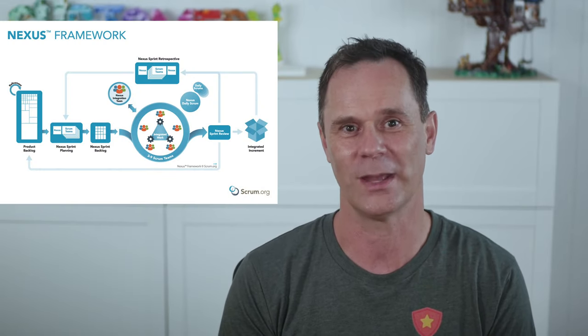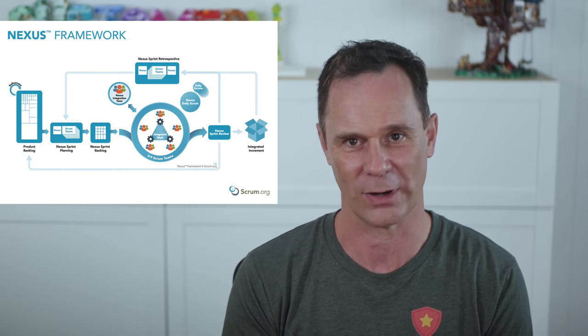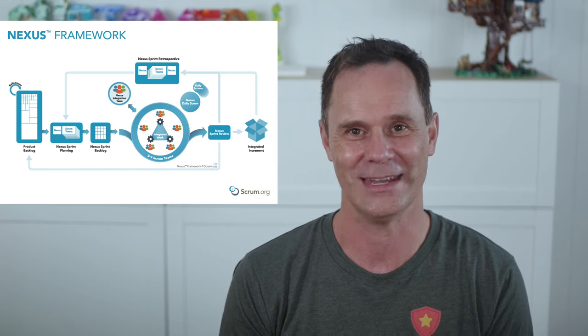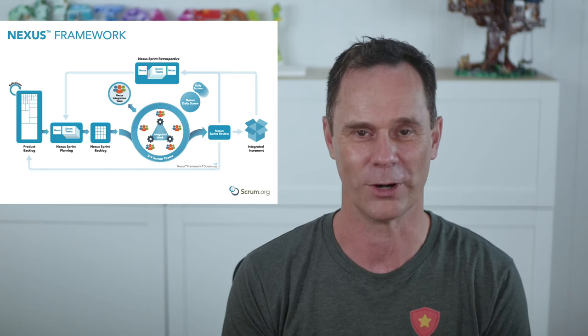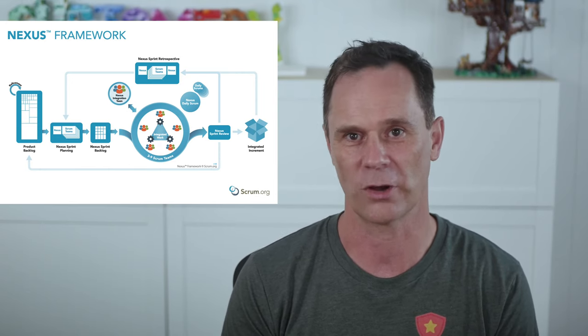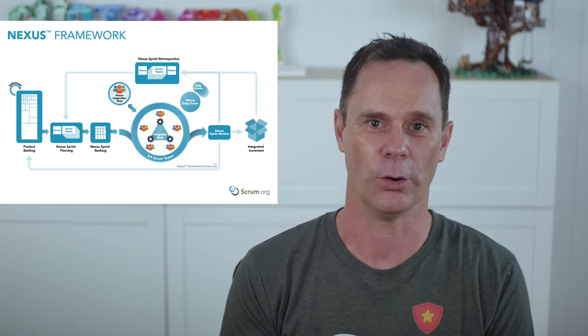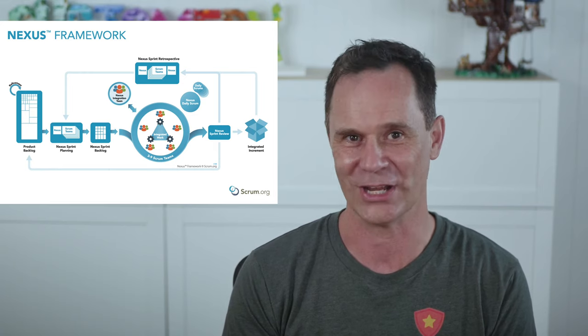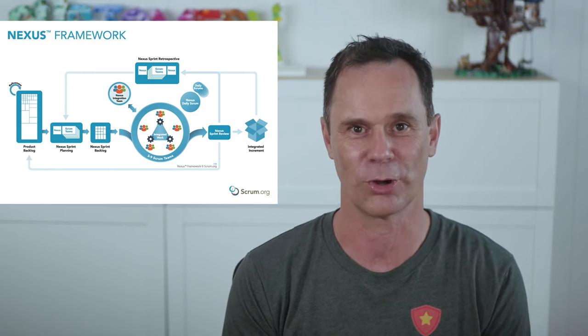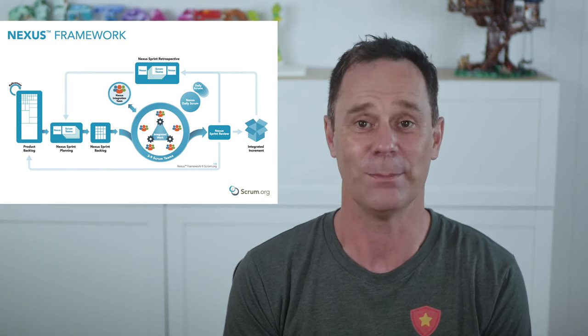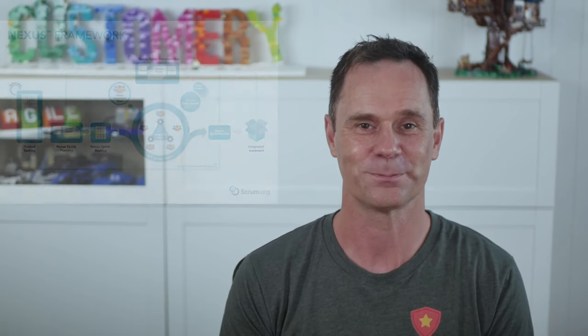Better communication and transparency between the teams would have helped us re-sequence our work to avoid those dependencies. That's why I want to share with you a concept from the Nexus framework called the cross-team refinement board. Nexus from scrum.org builds upon scrum's foundation and extends it to help multiple teams work from a single product backlog to build a single product. One of its co-creators is Richard Hundhausen, who's a former Microsoft MVP and regional director.